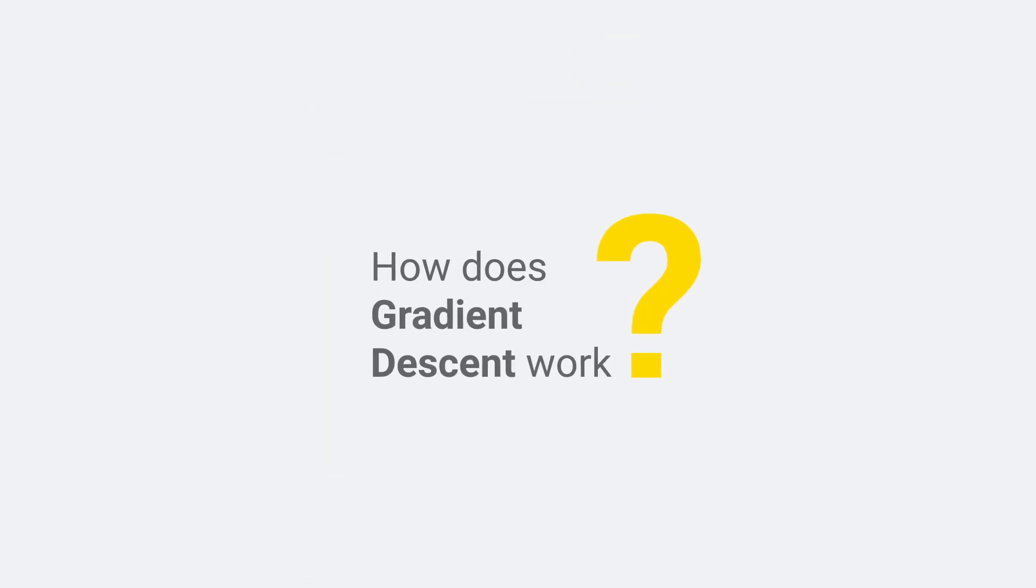How does gradient descent work? Gradient descent is one of the most popular algorithms for model optimization, and it is often used to optimize parameters in neural networks.